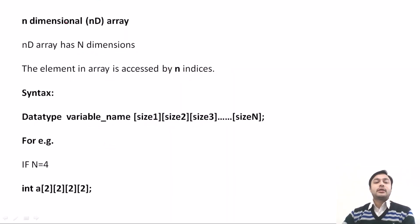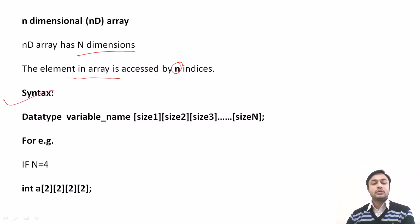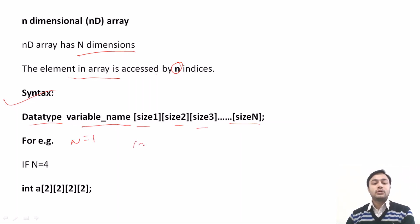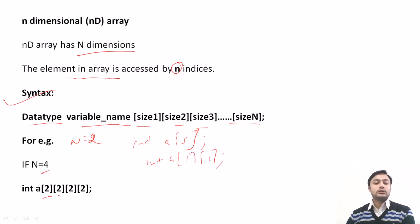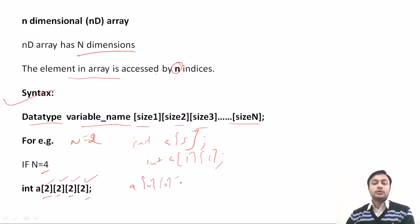In an n-dimensional array, there will be n dimensions and the element is accessed using n indexes. The syntax is: data type, then array name, then size1, size2, size3, up to size n. For example, if n equals 1, then int a[5] is a single-dimensional array. If n equals 2, you define two sizes: int a[1][2]. If n equals 4, it is a 4-dimensional array and the first element is a[0][0][0][0].